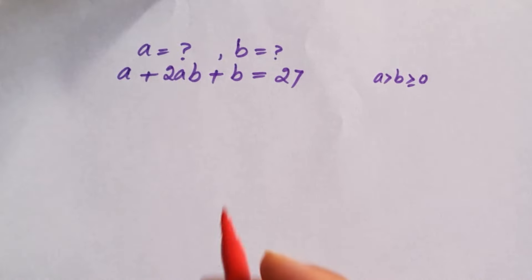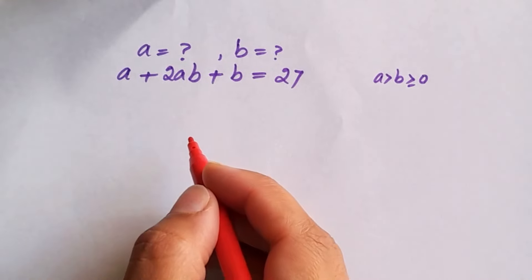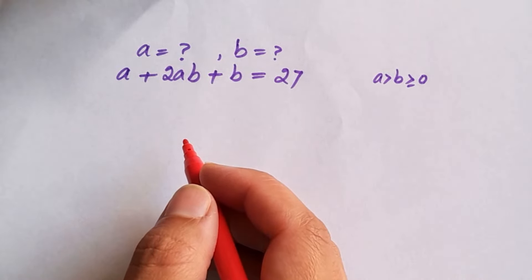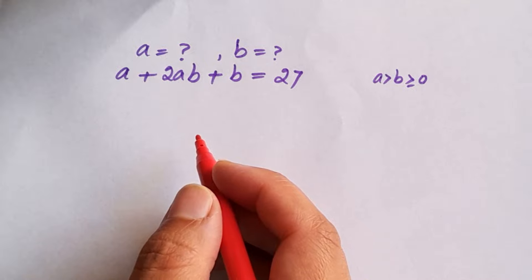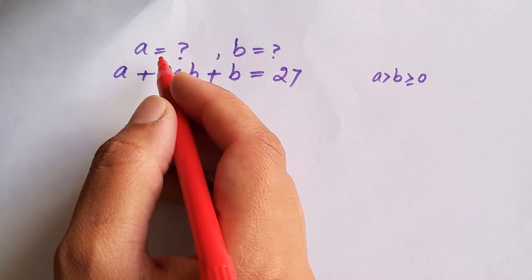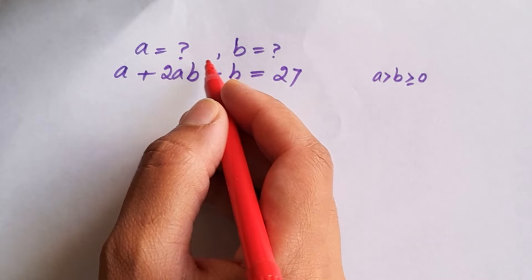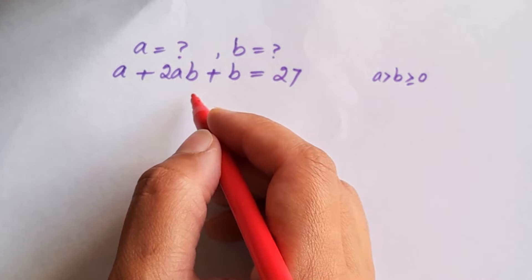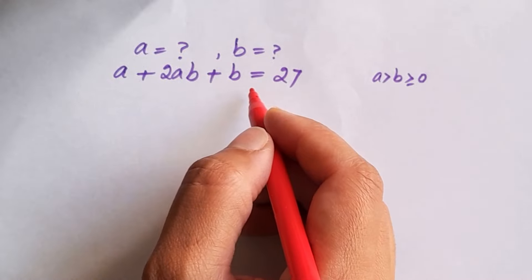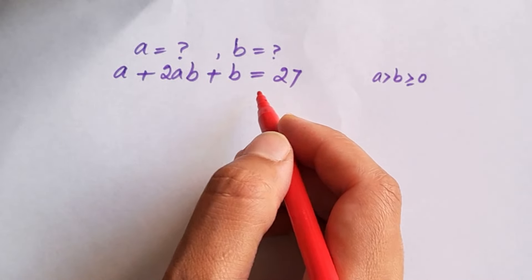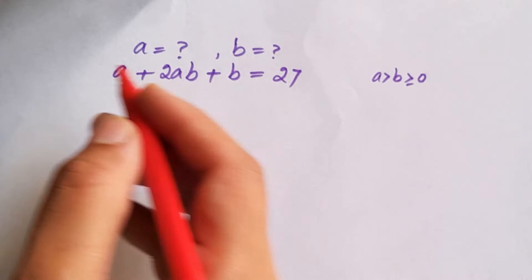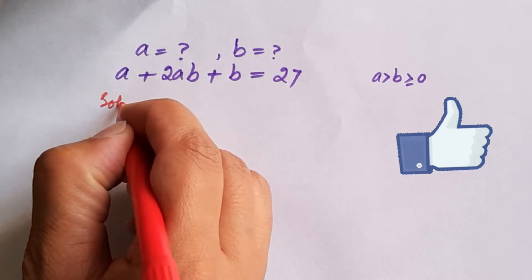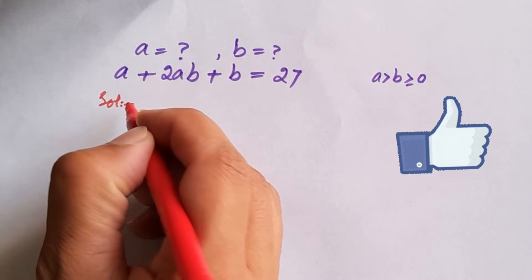Hello, welcome all of you. Let's solve this beautiful algebra equation where we have to find the value of a and b using the information given: a plus 2ab plus b is equal to 27. Let's get started and see the solution, and if you like it please thumbs up.